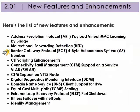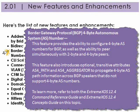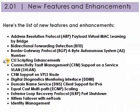Border Gateway Protocol 4-byte Autonomous System Number. This feature provides the ability to configure 4-byte AS numbers for BGP, as well as the ability to peer simultaneously with 2-byte and 4-byte peers. This feature also introduces optional transitive attributes AS4_path and AS4_aggregator to propagate 4-byte AS path information across BGP speakers that do not support 4-byte AS numbers. To learn more, refer to the Concepts Guide and the Command Line Reference Guide.